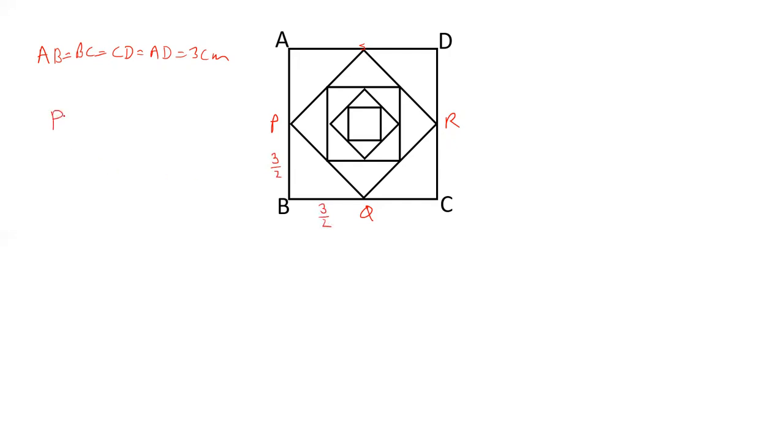To calculate the value of PQ, we can apply the Pythagoras theorem. PQ square equals PB square plus BQ square. Now PB is 3 by 2 and BQ is also 3 by 2.